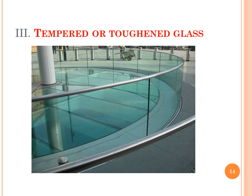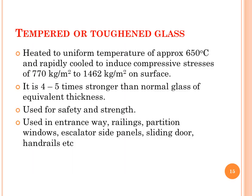The third type of architectural glass is tempered or toughened glass. It is produced by heating to a uniform temperature of approximately 650 degrees Celsius and then rapidly cooling to induce compressive strength of 770 kg per meter square to 1462 kg per meter square on the surface. It is four to five times stronger than normal glass of equivalent thickness. It is used for safety and strength, mainly in entryways, railings, partition windows, escalator side panels, sliding doors, handrails, etc.